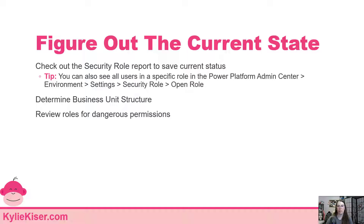It's also important to figure out your business unit structure and see if there are ways it can be improved or used to simplify the rest of your security model. Also review your security roles for any dangerous permissions — things like delete, bulk delete, sharing, or exporting. Those are things you want to look for and ask: is this really needed? Is there a valid reason? Then figure out what needs to be done and how you can modify it.